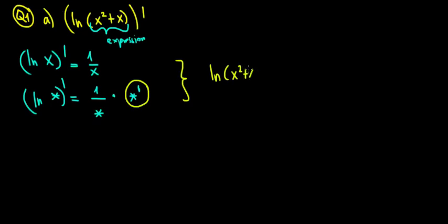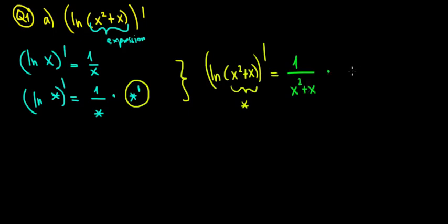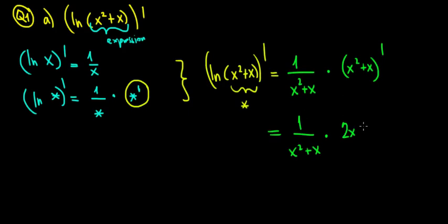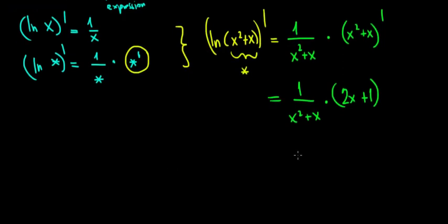So how does this apply to our example? Taking the derivative of ln(x squared plus x) — remember, x squared plus x is our star. We have 1 divided by our star, which is x squared plus x, times the derivative of it. The derivative of x squared plus x is 2x plus 1. So writing it neatly, the answer is (2x plus 1) over (x squared plus x).